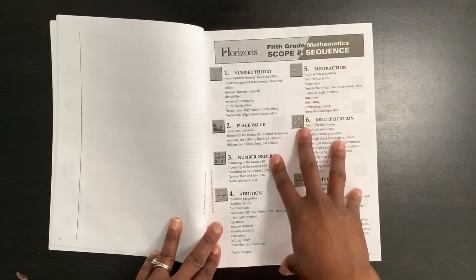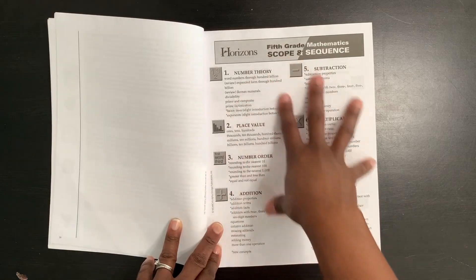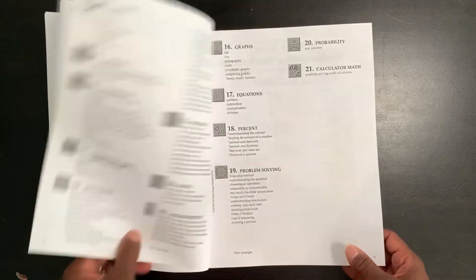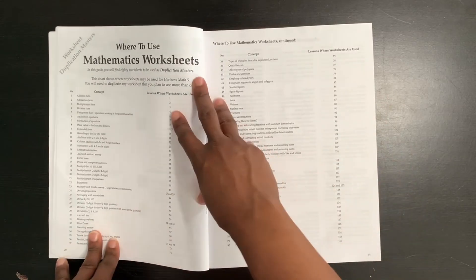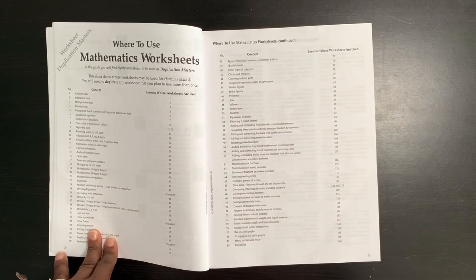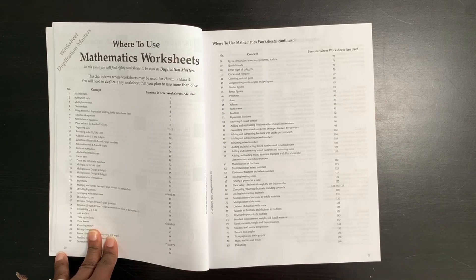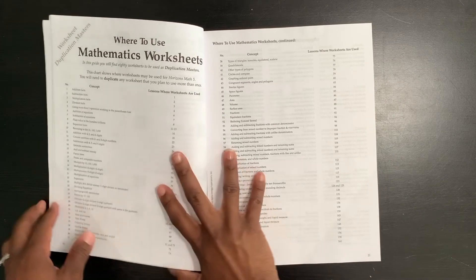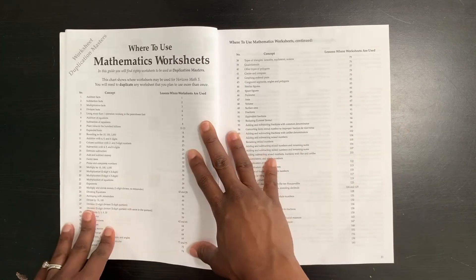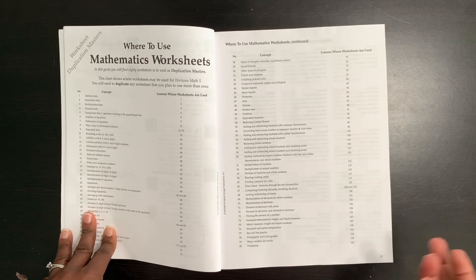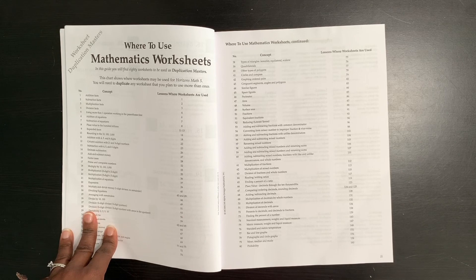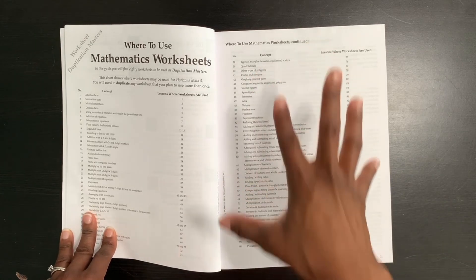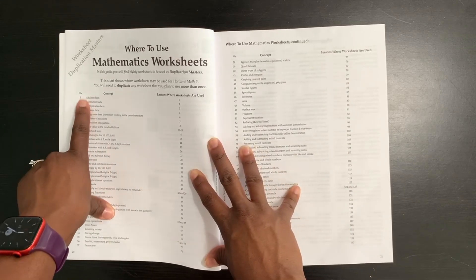So when you get here, you have your scope and sequence. It basically just tells you everything that's going on and what your child's going to be learning within this curriculum. And here there are mathematics worksheets and this is supplemental work to help reinforce the concepts. If your child is needing help with this, I do enjoy having these because you might spend an extra day on division. You might spend an extra day on addition and subtraction with regrouping. It just depends. And so the worksheets are here to help you.